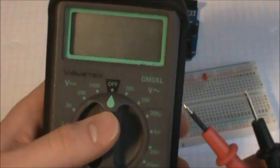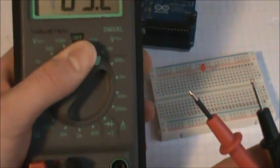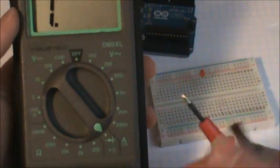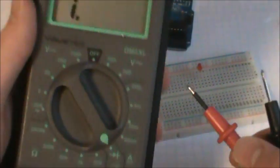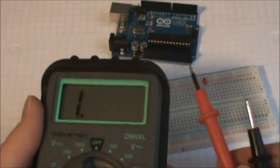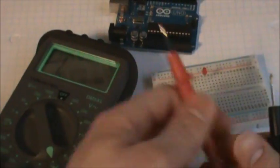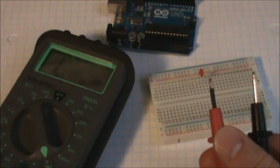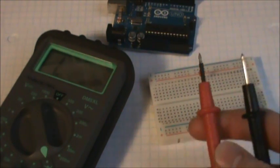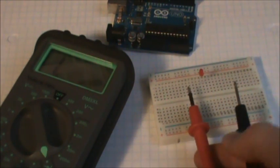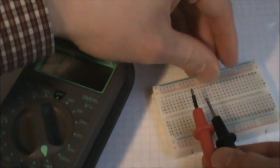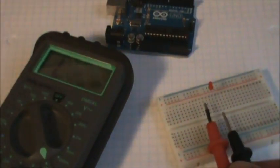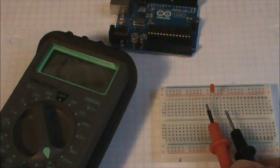On your voltmeter, you have multiple settings. This one here is the diode setting with the little diode symbol. What this will do is it applies a little bit of current through the prongs on the sensor, and it will light up the LED and tell you how much voltage drop over the LED.